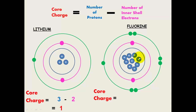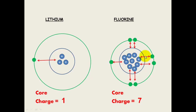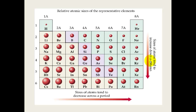For fluorine, its core charge equals 9 protons minus 2 inner shell electrons, giving a core charge of 7. The higher the core charge, the more attraction the outer shell electrons have to the nucleus, making the atom smaller. So lithium has a core charge of 1 and fluorine has a core charge of 7, which means more attraction pulls the radius in. As we go down a group atomic radius increases, and as we go across a period it decreases.